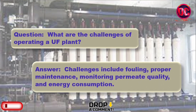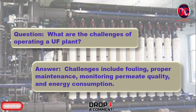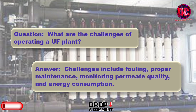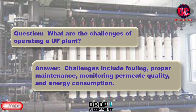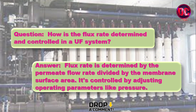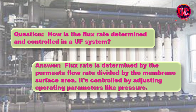What are the challenges of operating a UF plant? Challenges include fouling, proper maintenance, monitoring permeate quality, and energy consumption. How is the flux rate determined and controlled in a UF system? Flux rate is determined by the permeate flow rate divided by the membrane surface area. It's controlled by adjusting operating parameters like pressure.